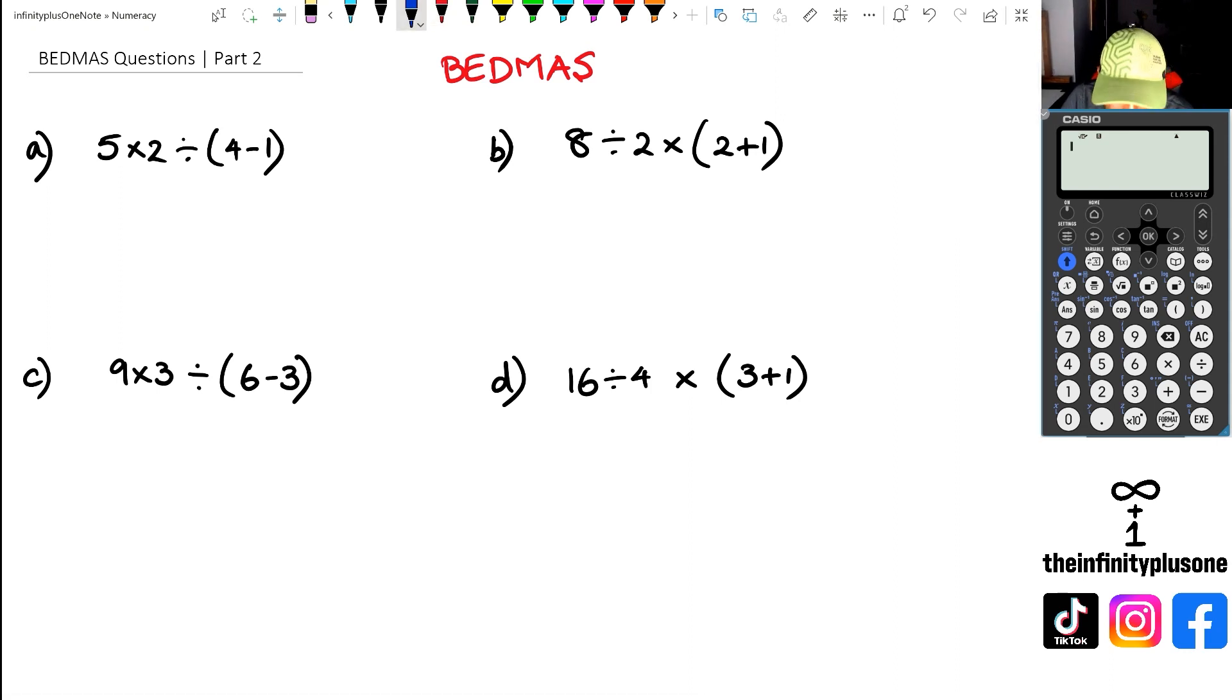Looking at question A, the first thing we want to be doing is the brackets first. And if we do the brackets first, we are going to get 5 times 2 divided by 3, because we've got 4 minus 1 is 3.